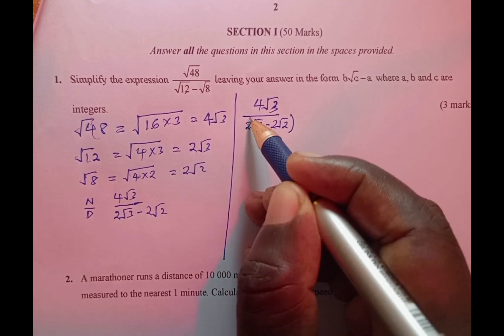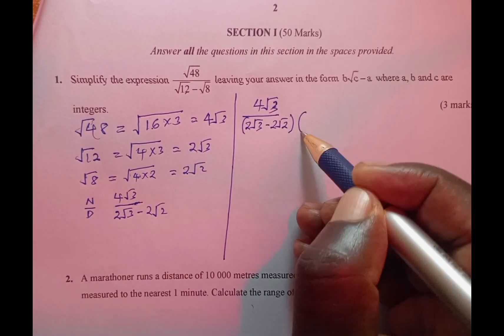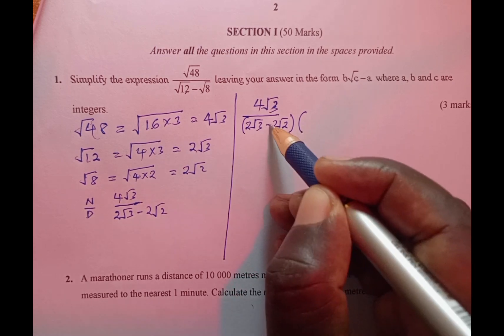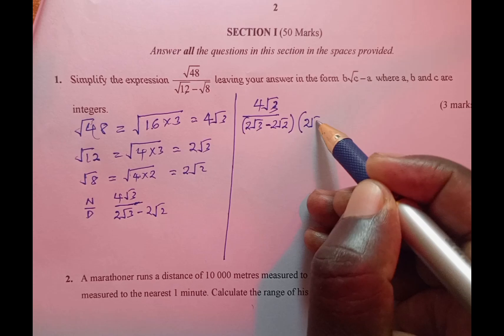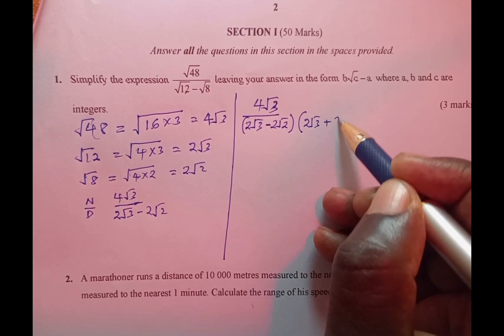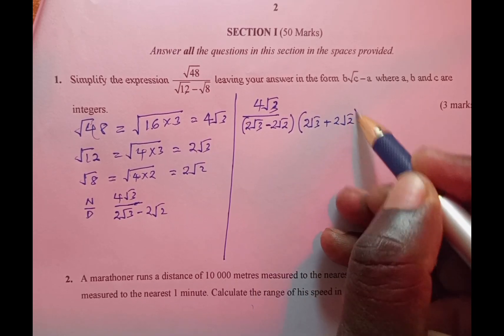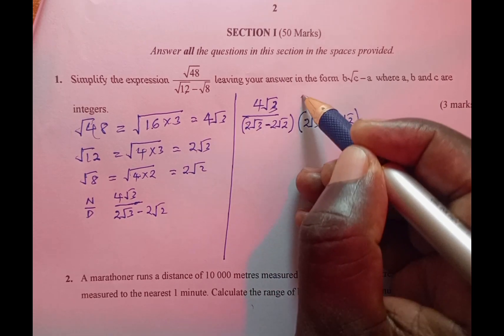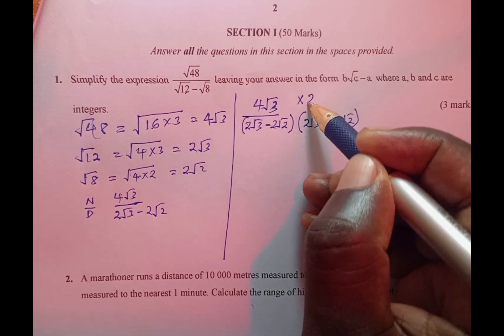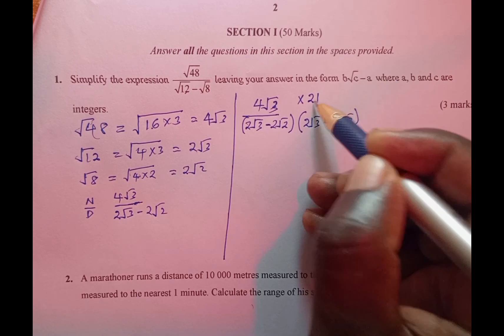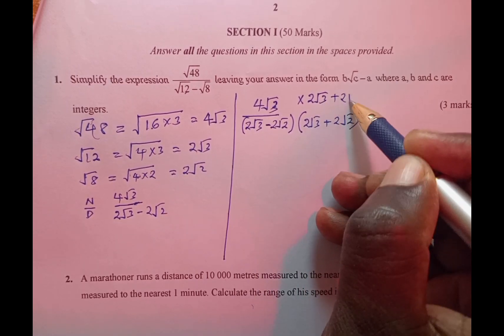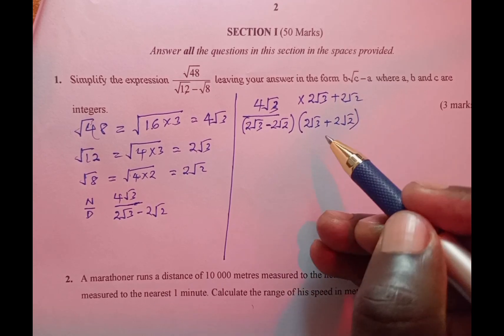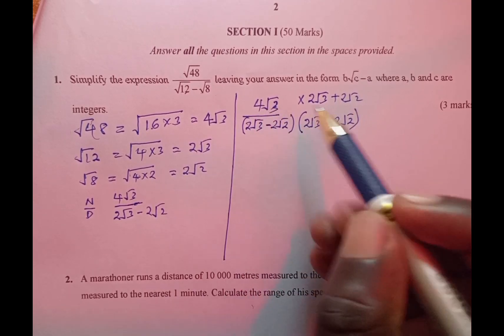To rationalize the denominator, we take the denominator and multiply by the conjugate side, which is the opposite of this sign. That is 2√3 plus 2√2. We also do the same with the numerator by taking 2√3 plus 2√2.